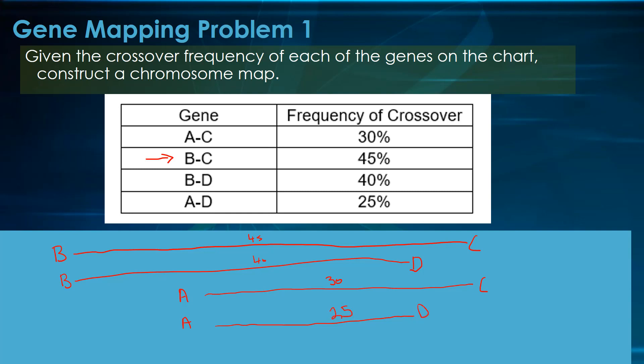Now we can put it all together. So this chromosome map should look as follows: B, followed by A, followed by D, and lastly, C.